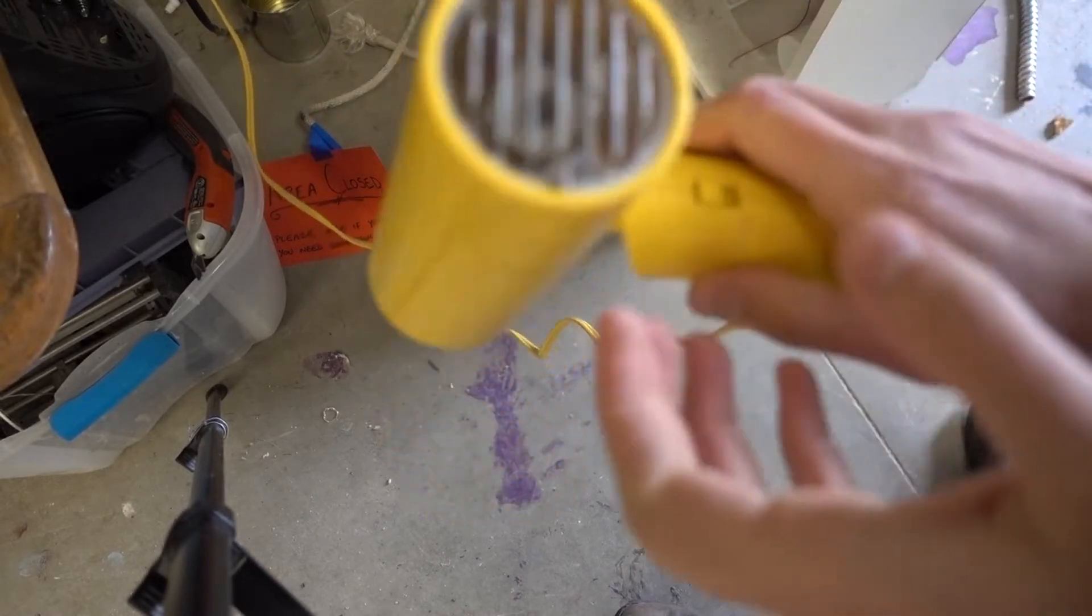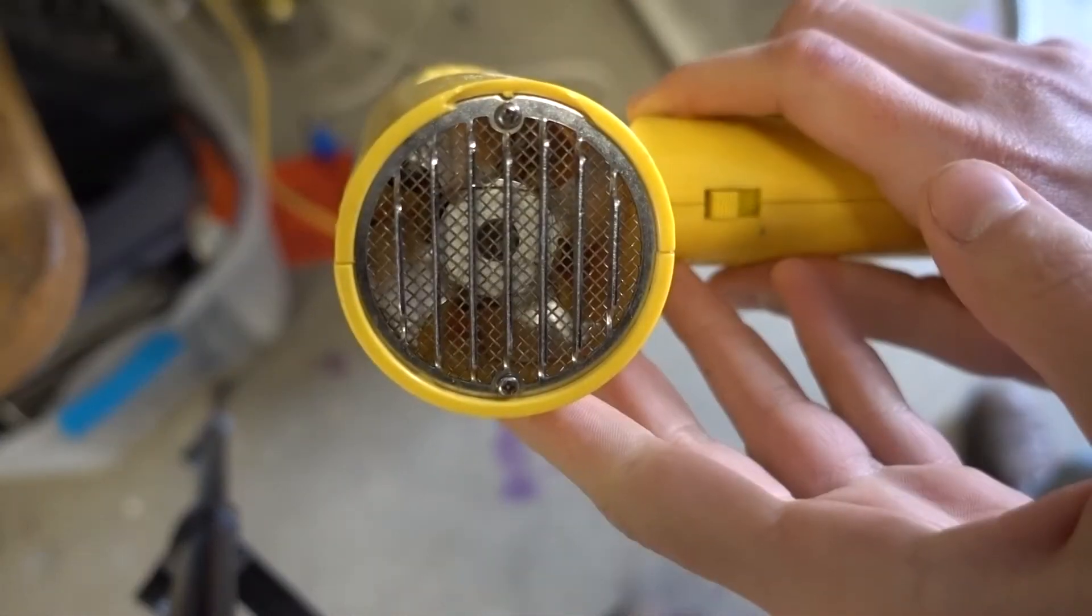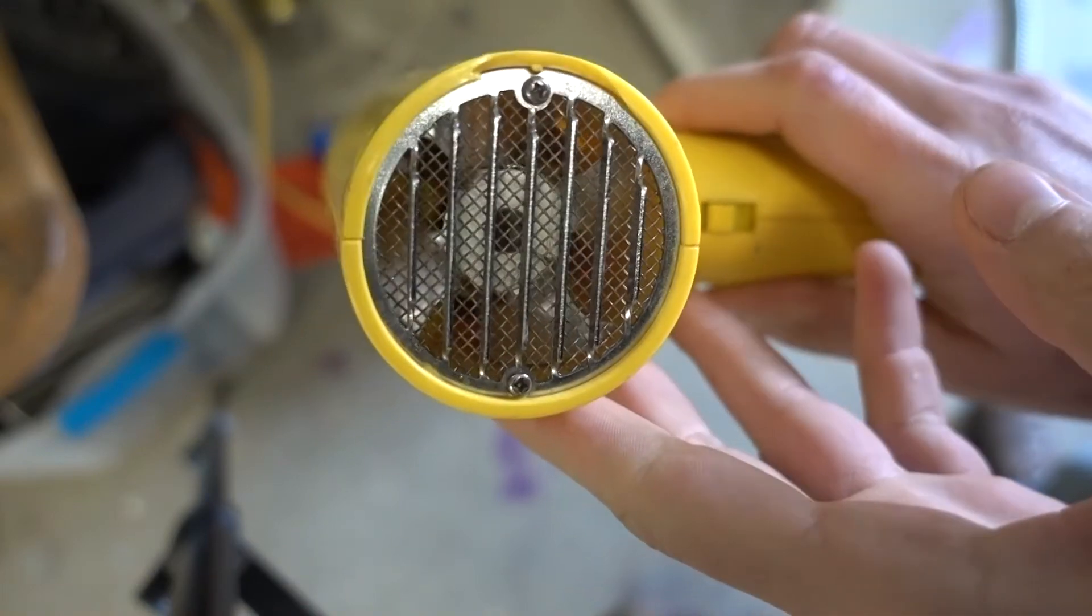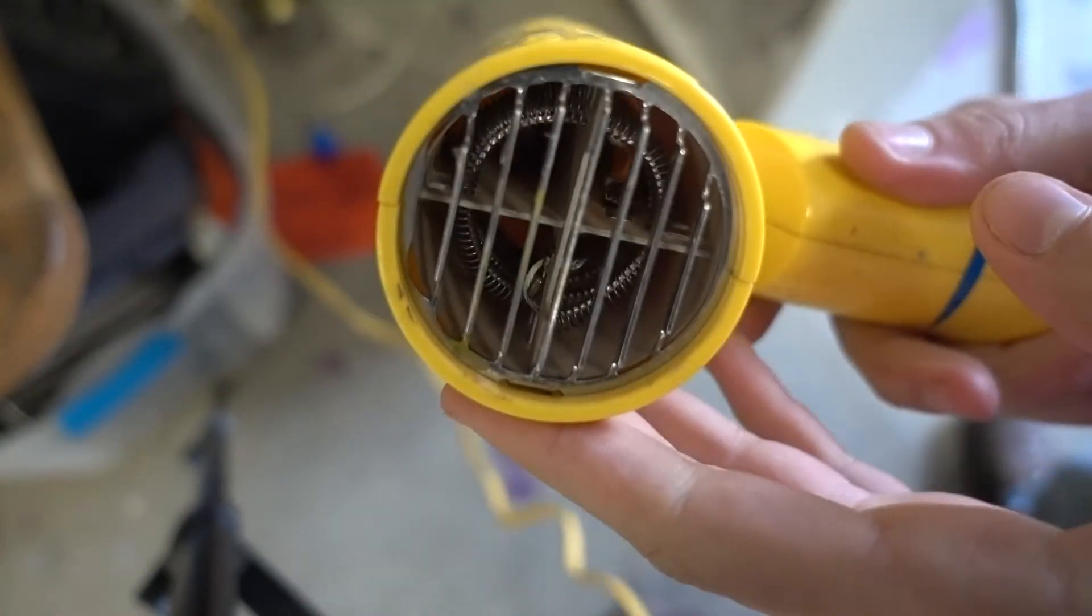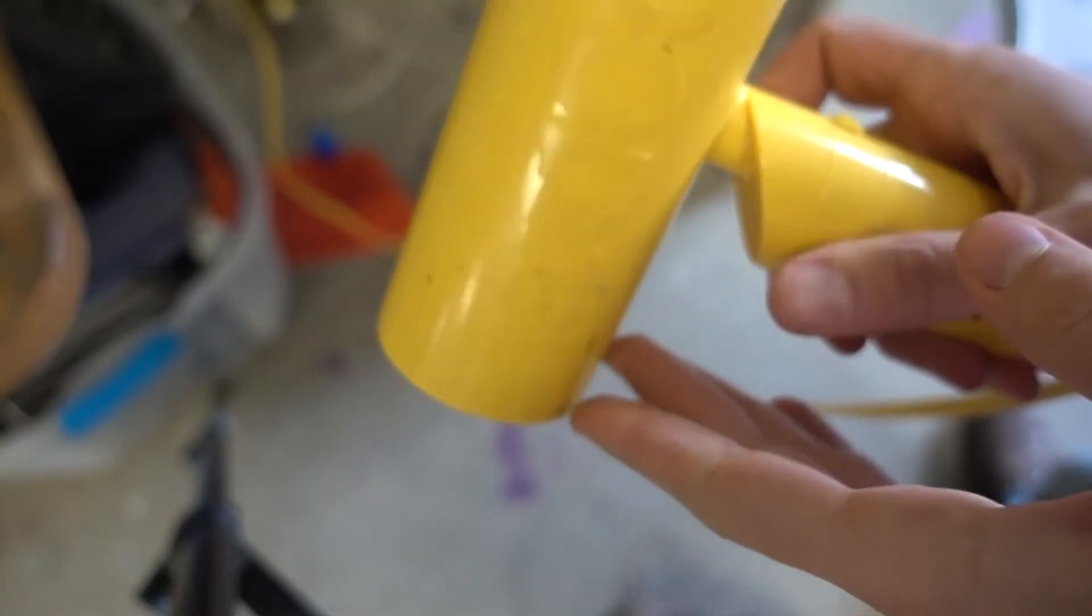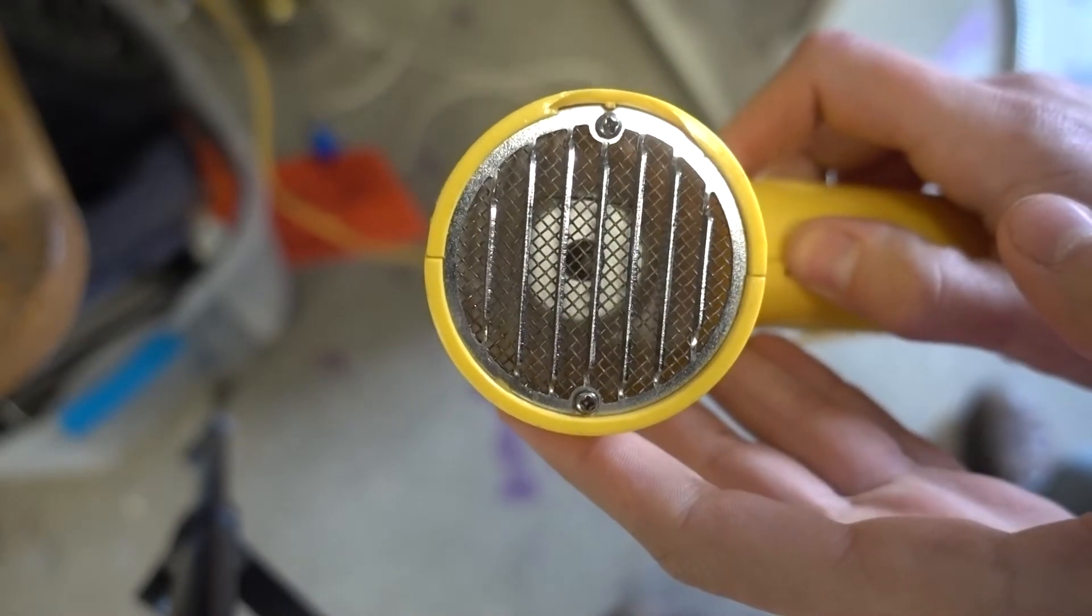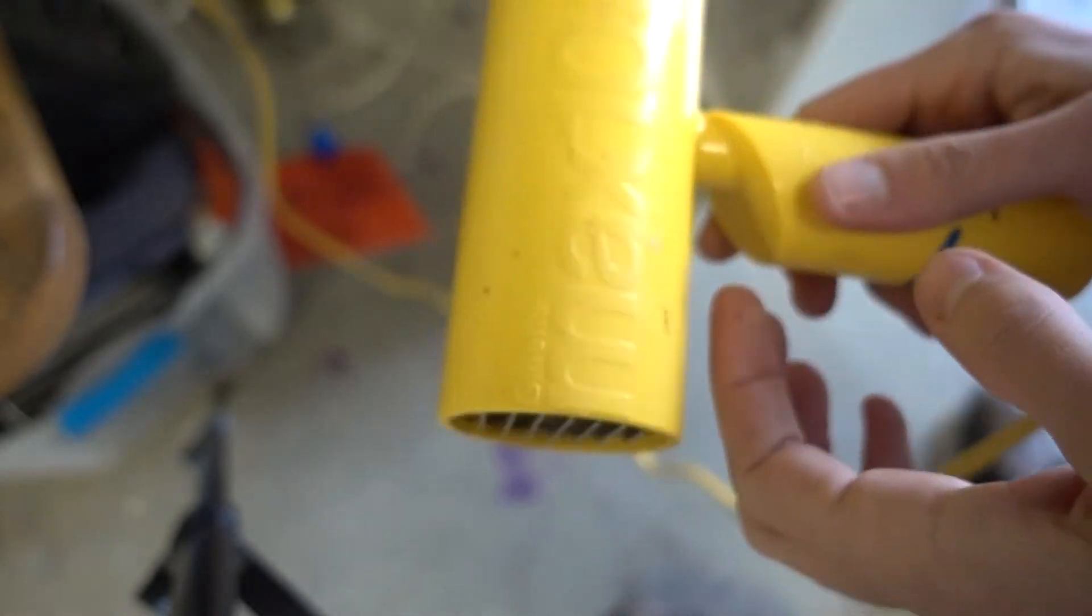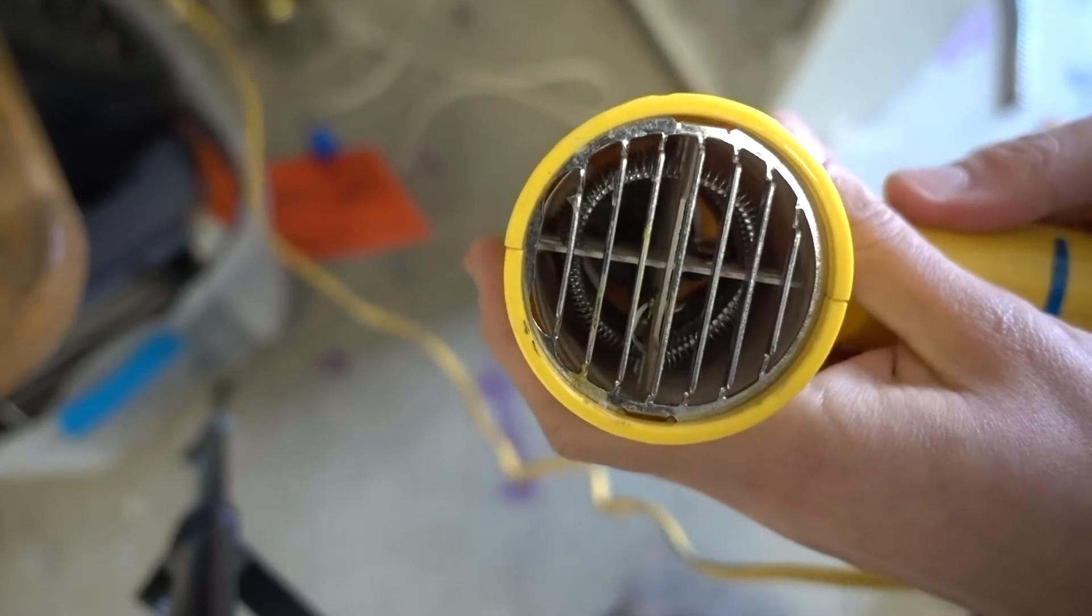Thankfully we have an experimental hairdryer that we can mess around with just a little to see if we can get a glimpse of this nichrome in action. Usually when a hairdryer is going this little fan in the back is going to disperse the heat out the front of the hairdryer to keep anything from getting too hot.